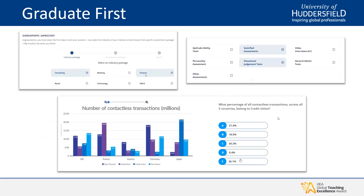You can also use a website called Graduate First to help plan and prepare for an upcoming psychometric test. This is really useful because it provides a tailored approach to your preparation — you can pick the industry you are exploring and it will give you a variety of tests commonly used within that industry. On the screen you can see a few industries to select from, different test types to choose from, and an example numerical reasoning test with a graph data set and questions. Graduate First covers all the different types of tests discussed in this session.